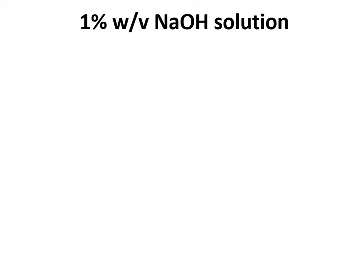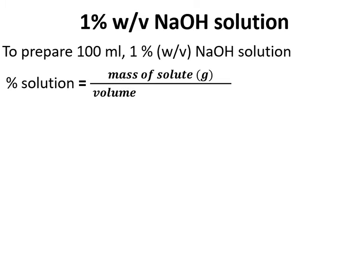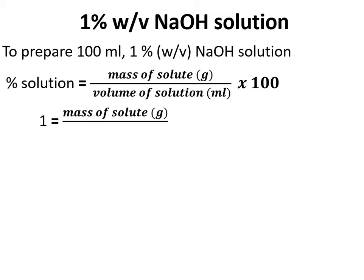Let's prepare a 1% weight by volume sodium hydroxide solution. To prepare 100 mL of 1% weight by volume NaOH solution, we will use the first expression: percent solution equals mass of solute in grams divided by volume of solution in mL, multiplied by 100. Putting in the values: percent solution is 1, mass of solute is to be calculated, and volume of solution is 100 mL.